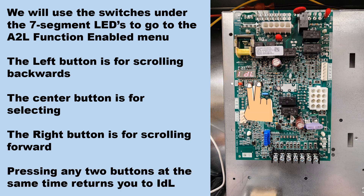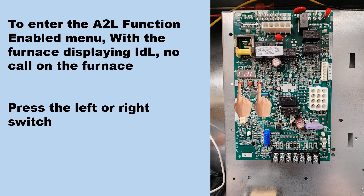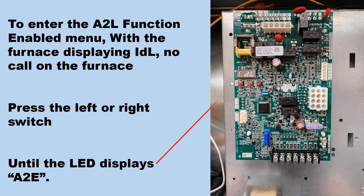Pressing any two buttons at the same time returns to IDL. To enter the A2L function enabled menu with the furnace displaying IDL — which means no call on the furnace — press the left or right switch until the LED displays A2E.